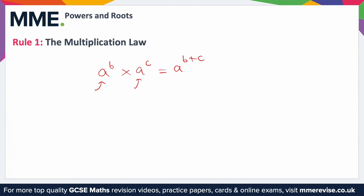This applies to all terms including negative terms. For example, if we had x to the power of minus m times x to the power of n, the x's are both the same — that's what we need. We can still apply the same rule to get x to the power of minus m plus n, which we could tidy up to x to the power of n minus m.